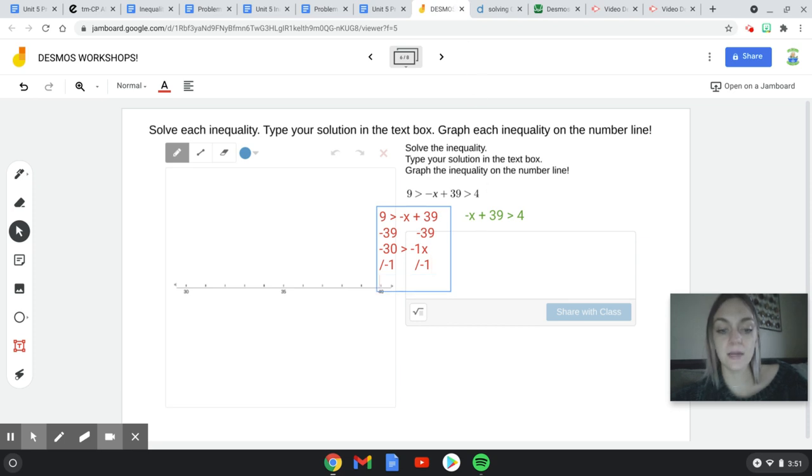So when I'm solving this, I'm going to get 30 on the left side, but because I divided by a negative number, my sign has to switch. So I'm changing directions with this sign. And then the negative 1s cancel out, so I'm just left with x here.